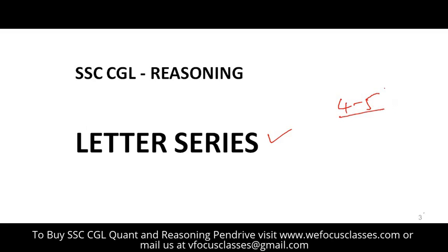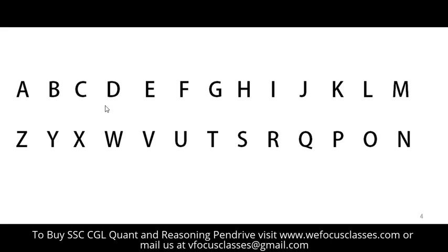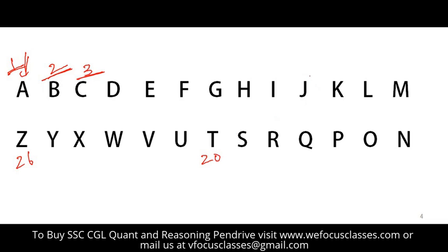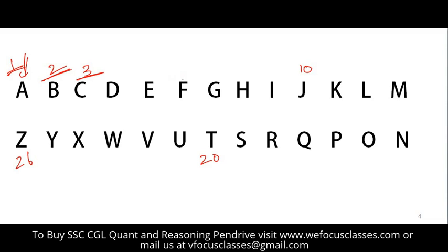From the topic name itself it is clear that the topic is all about letters — the alphabet from A to Z. To solve problems from this topic, we need to know all the alphabets accurately along with their place values. The place value means A is the first letter so its place value is 1, B is 2, C is 3, and so on. The place value of Z is 26, T is 20, J is 10.